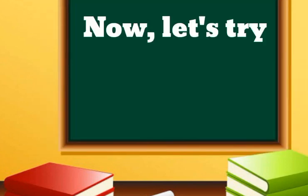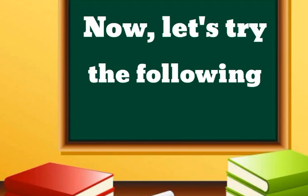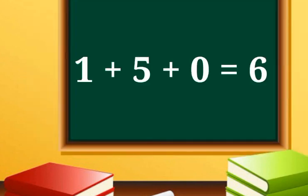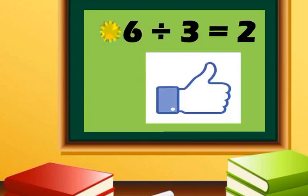Now let's try the following. Is 150 divisible by 3? 1 plus 5 plus 0 equals 6. So 150 is divisible by 3 because 6 divided by 3 equals 2.